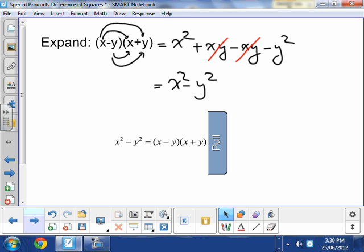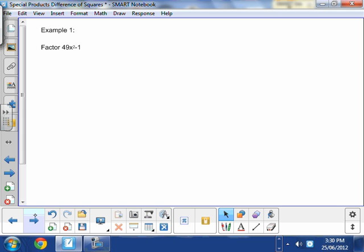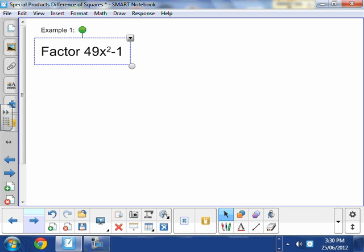Okay. So now that we know that, this formula is quite important. We need to apply it until we know it. Let's start applying it to 49x squared minus 1. But this doesn't look like a difference of squares, Miss Hardica.